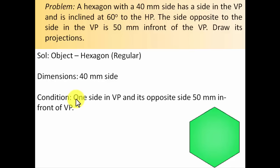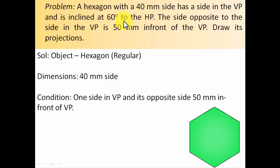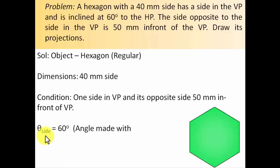One condition is that one side is in the VP. The other condition is the inclination: the plane is inclined at 60 degrees to the HP, meaning the side which is in the VP makes an angle of 60 degrees with the horizontal plane. So theta for the side equals 60 degrees.